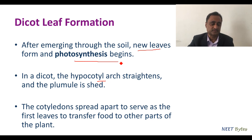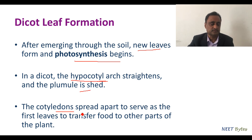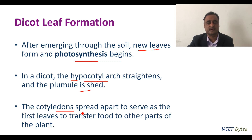After emerging from the soil, new leaves form and photosynthesis begins. In dicot, the hypocotyl arc becomes straight and the plumule is set. The cotyledons spread apart to serve as the first leaf, starting the photosynthetic process and transferring food to other parts of the plant.